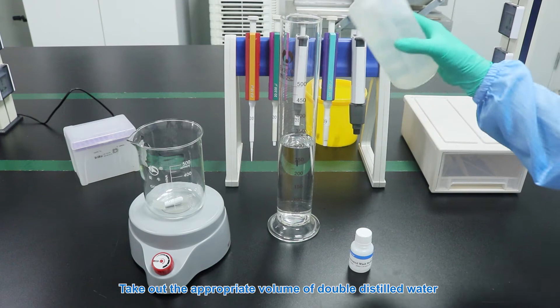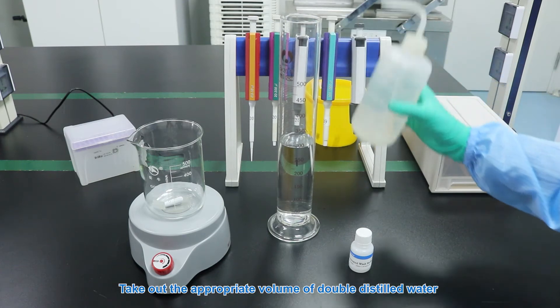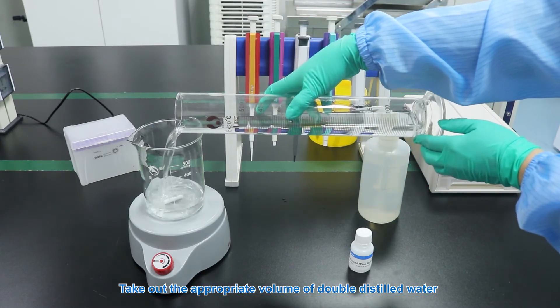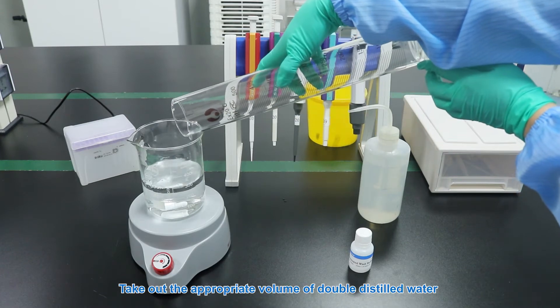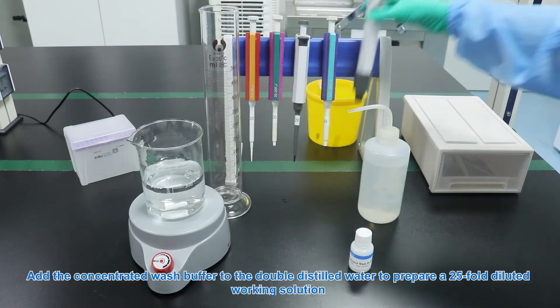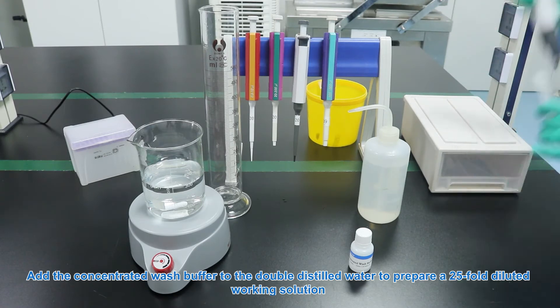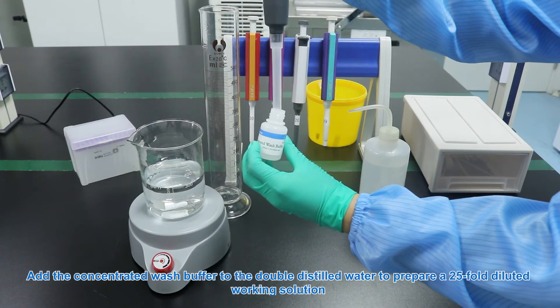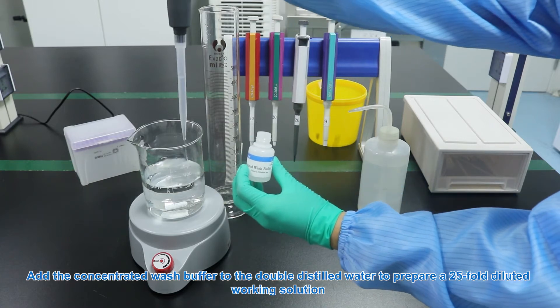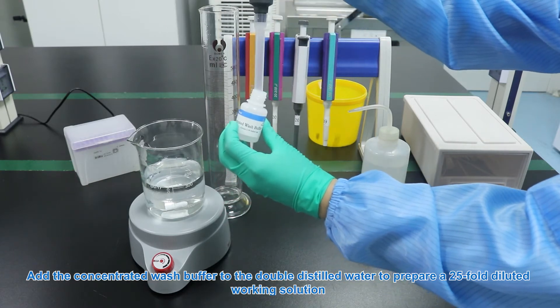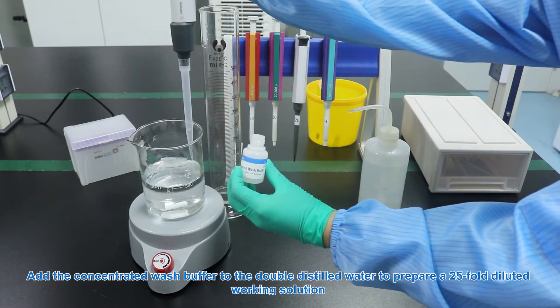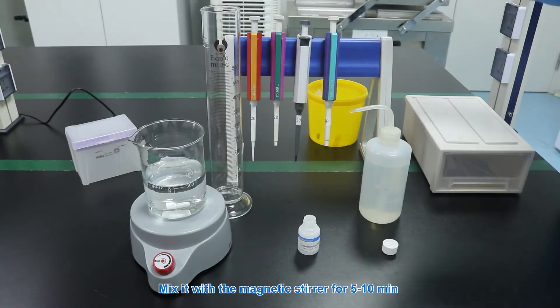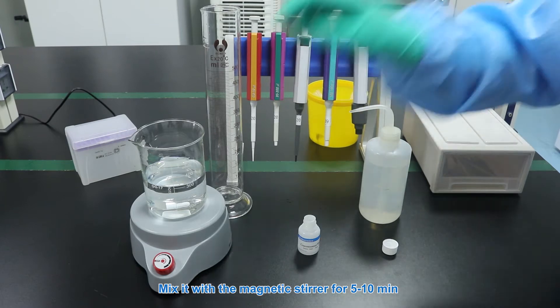Take out the appropriate volume of double distilled water. Add the concentrated wash buffer to the double distilled water to prepare a 25-fold diluted working solution. Mix it with the magnetic stirrer for 5 to 10 minutes.